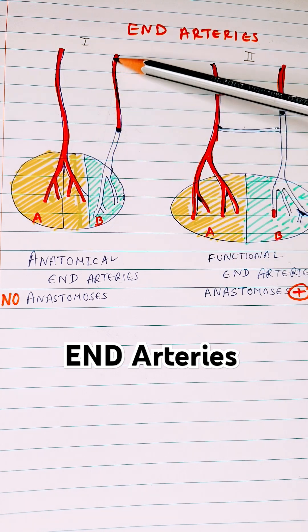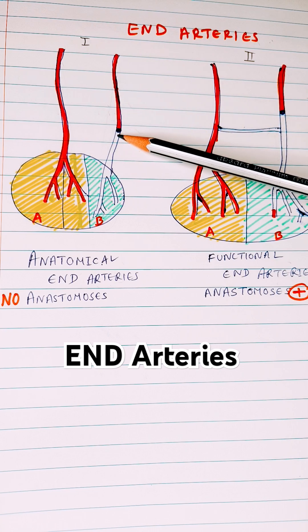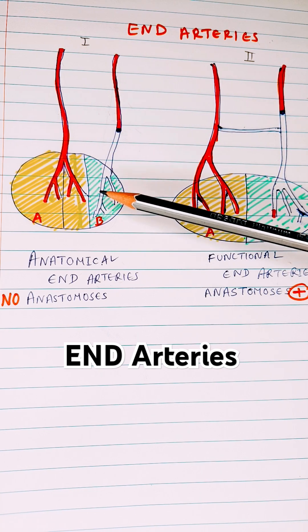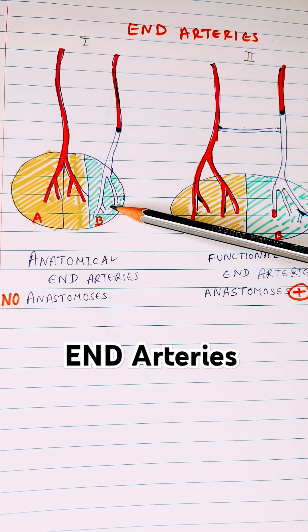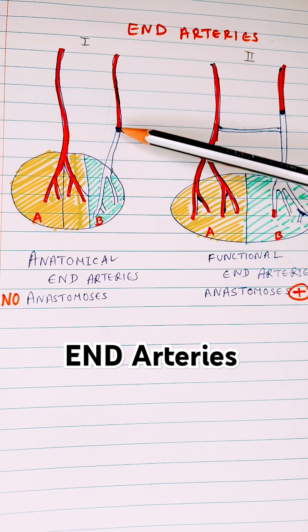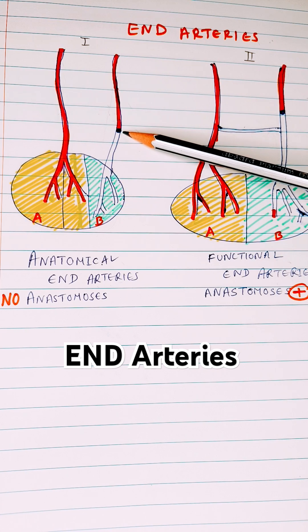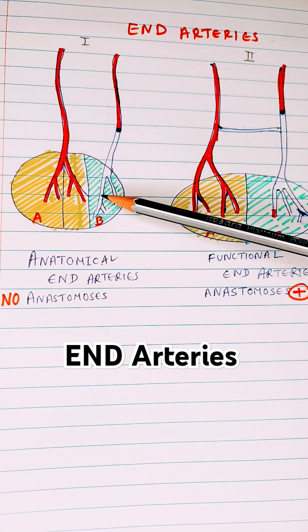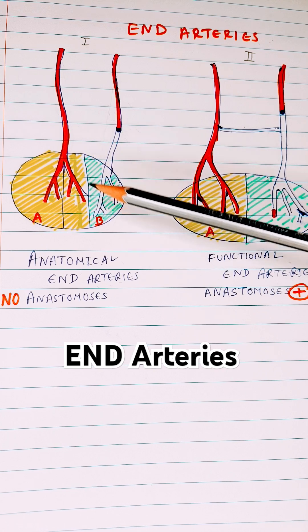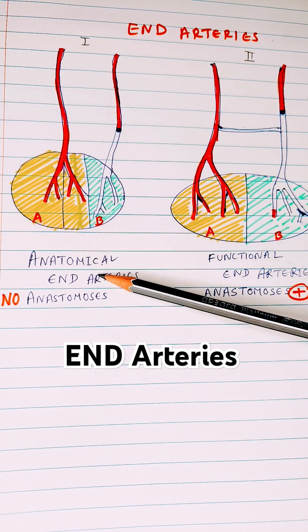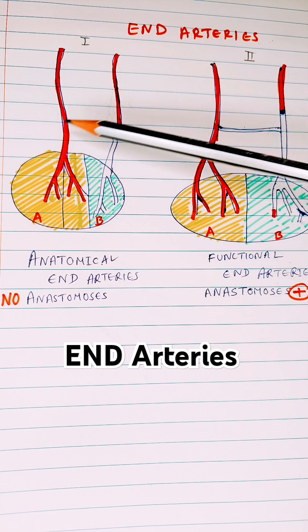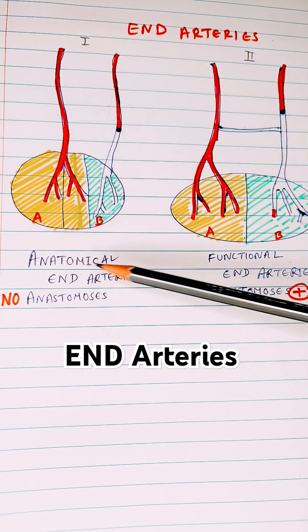Once an anatomical end artery is blocked, the tissue will suffer complete ischemia and undergo infarction. Any blockage in anatomical end arteries means there will be serious trouble. The common example is the central artery of the retina, which is an anatomical end artery. Remember, there is no anastomosis in anatomical end arteries.